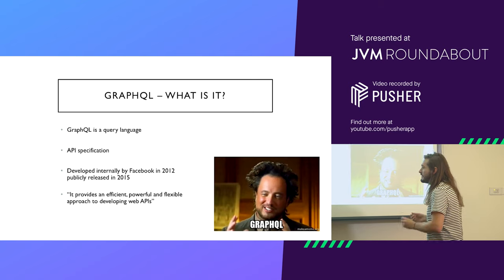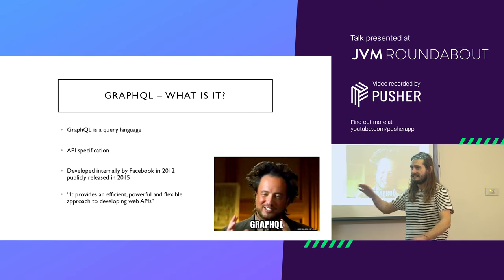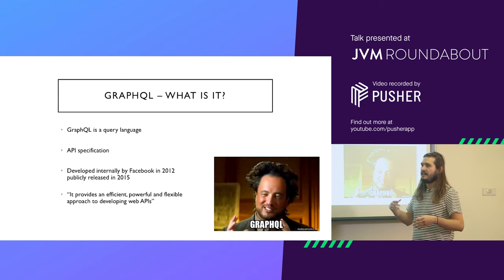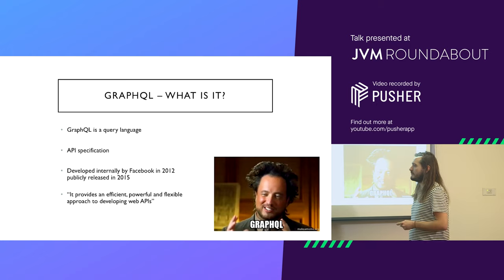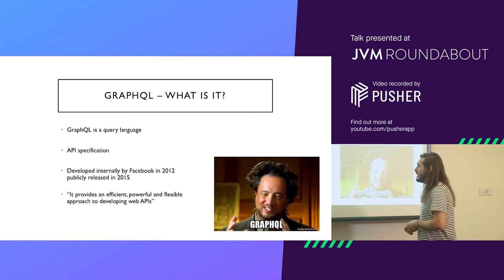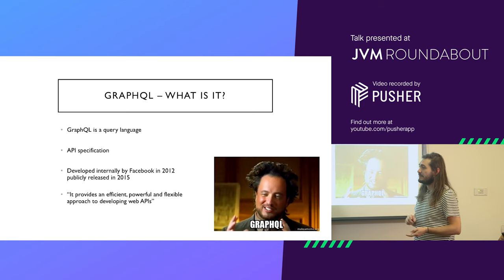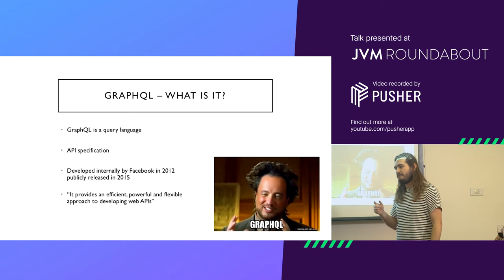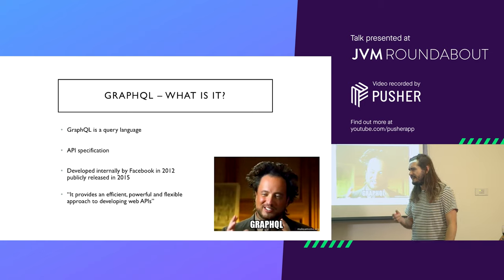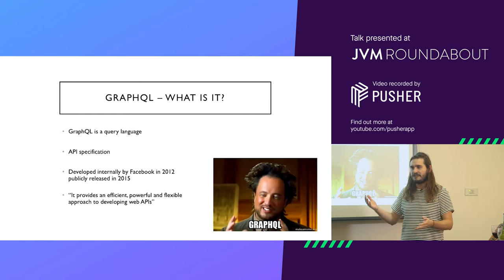So, GraphQL — first of all, forget REST. Forget everything you know about REST. GraphQL is an API specification and a query language, but don't think going into this like REST does — that makes things harder. Think of it more as something along the lines of SQL, and it'll be a little easier to understand. It's a query language, a nice API specification. It was developed internally by Facebook in 2012 and made public in 2015, and I think it's now its own independent foundation.